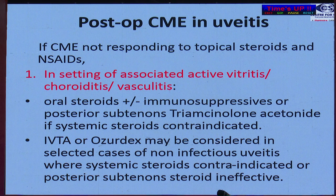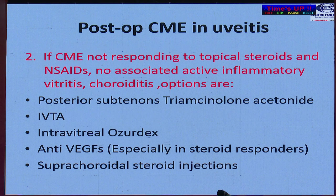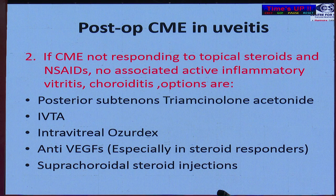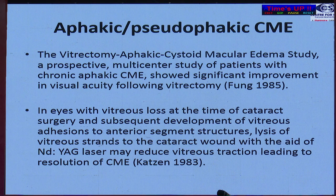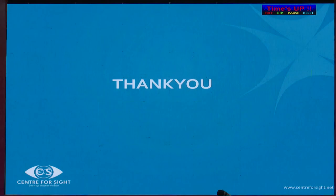In selected cases of non-infectious uveitis where systemic steroids are contraindicated or posterior sub-Tenon's is ineffective, IVTA or Ozurdex may be considered. If CME is not responding to topical steroids and NSAIDs and there is no associated active inflammatory vitritis or choroiditis, the first option is posterior sub-Tenon's triamcinolone acetonide; if that doesn't respond, then IVTA or Ozurdex. Anti-VEGF may be required in steroid responders.